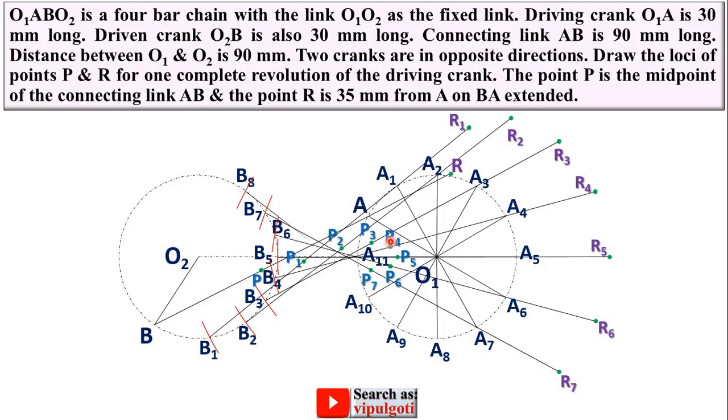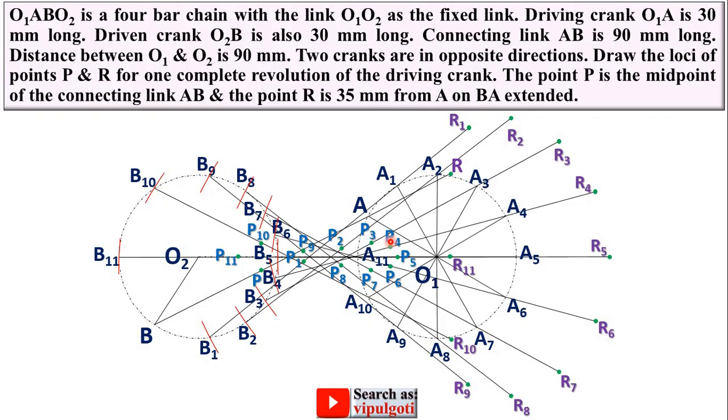Now locate B8 with the help of the compass so that you can locate R8 and P8. Next B9. Then B10, locate R10 and P10. Next last one, locate B11 so that you can locate R11 and P11.